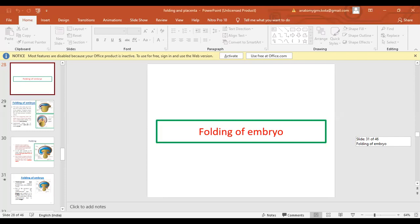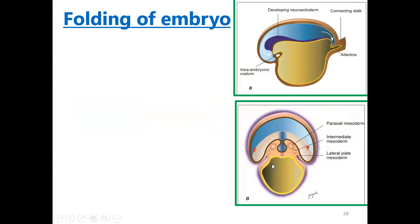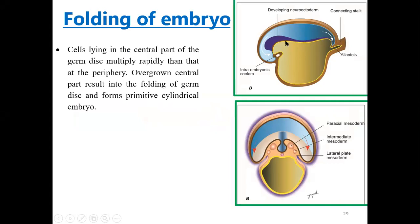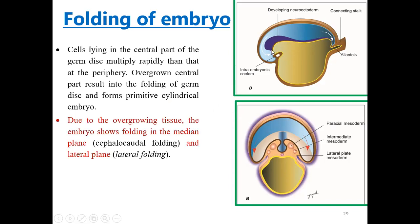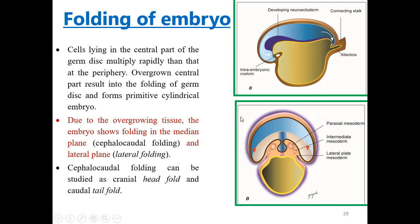We will continue with our class on the folding of the embryo. The cells in the central part of the germ disc multiply rapidly compared to those at the periphery. This overgrown central part results in folding of the germ disc, forming a primitive cylindrical embryo. Because space is restricted and the embryo is growing very fast, it undergoes folding. There is cephalocaudal folding in the median plane and lateral folding on the sides of the disc.